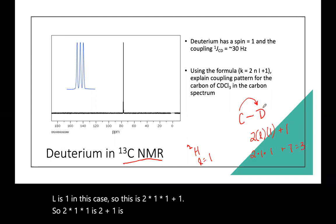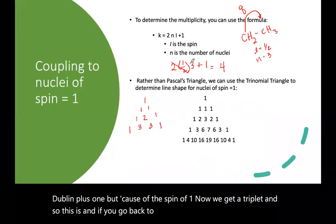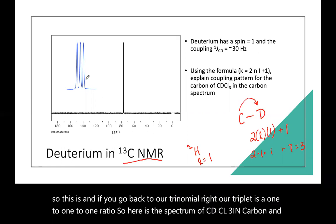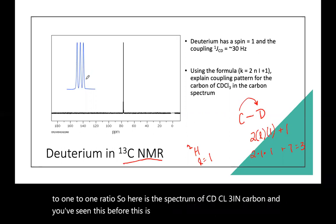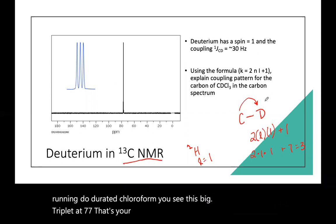So now we have two times I and one deuterium plus one, and I is one in this case. So this is two times one times one plus one. So two times one times one is two plus one is three. Normally we would think of this as being a doublet plus one, but because of the spin of one, now we get a triplet. And if you go back to our trinomial, our triplet is a one to one to one ratio. So here is the spectrum of CDCl3 in carbon. Whenever you're running deuterated chloroform, you see this big triplet at 77. That's your carbon to deuterium coupling.